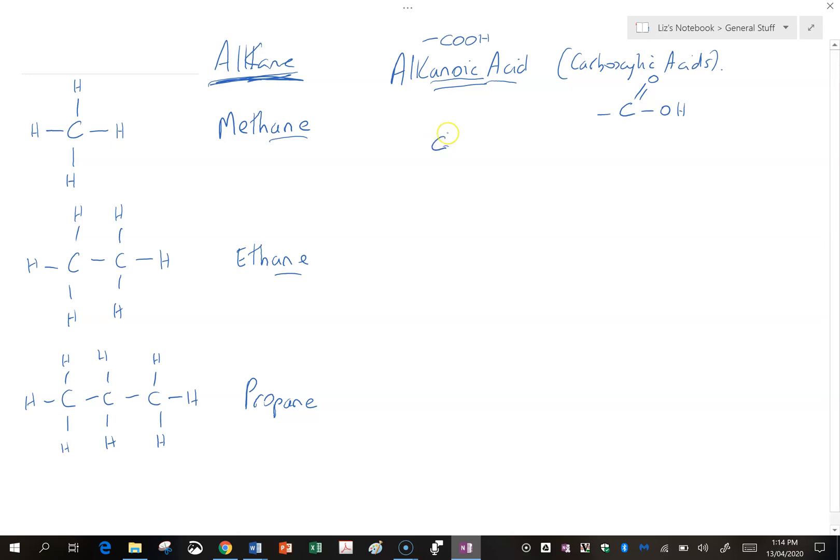So our simplest one is one carbon. Now looking at this, we can see it's got two bonds, three bonds, so it needs one hydrogen. And name-wise it's always the same. It's going to be methane, drop the E, and bring in oic. This is why they had all the new names. So methanoic acid.